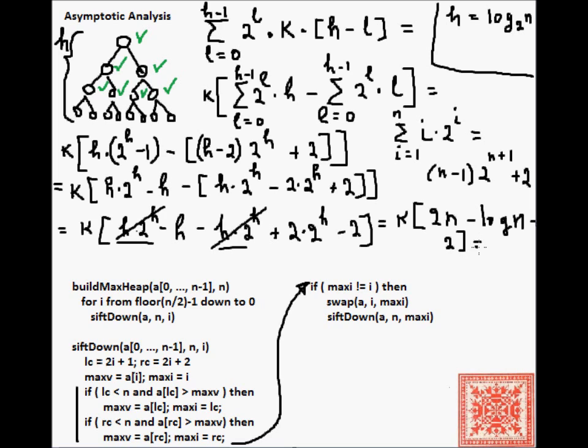And, this is theta of n. It's linear in the number of nodes.